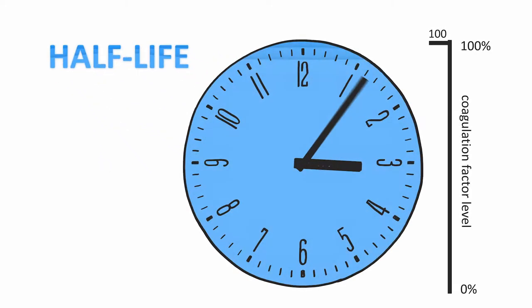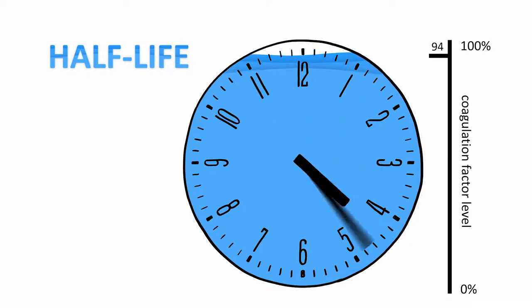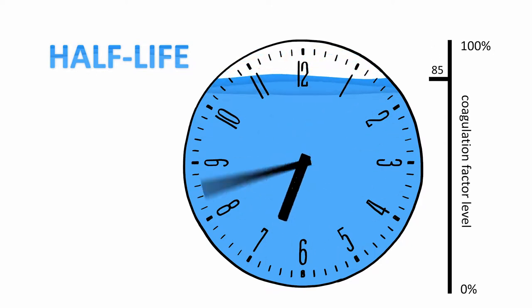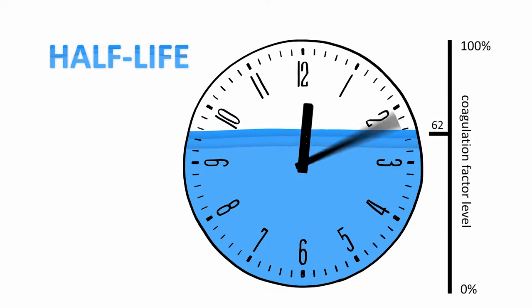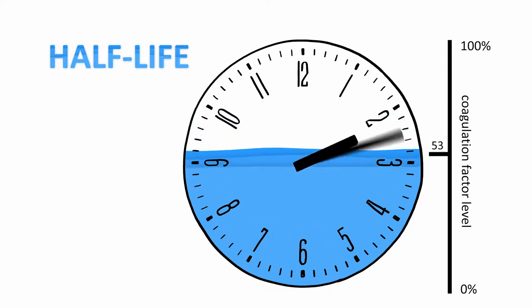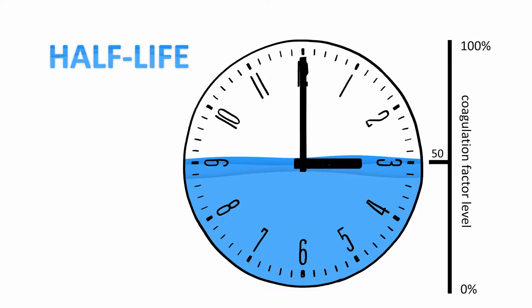An important term associated with the function of the coagulation factor is the half-life. The half-life is the time which the body needs to use up half of the initial coagulation factor. With every half-life time which passes, the quantity of coagulation factor in his body reduces by half.